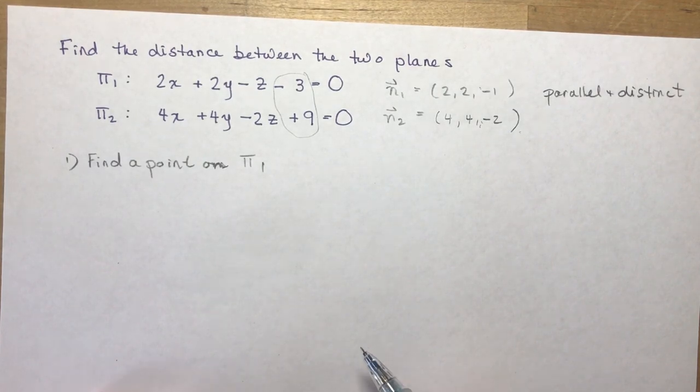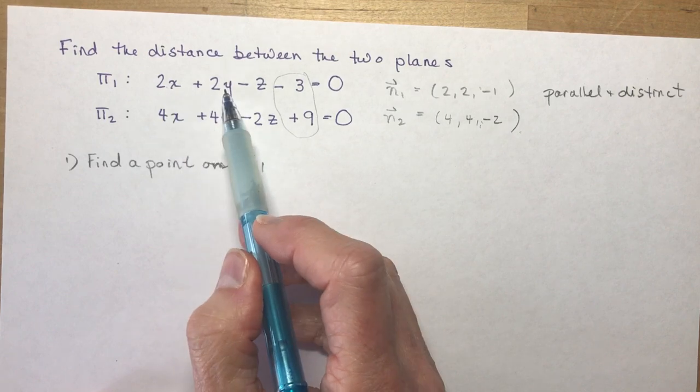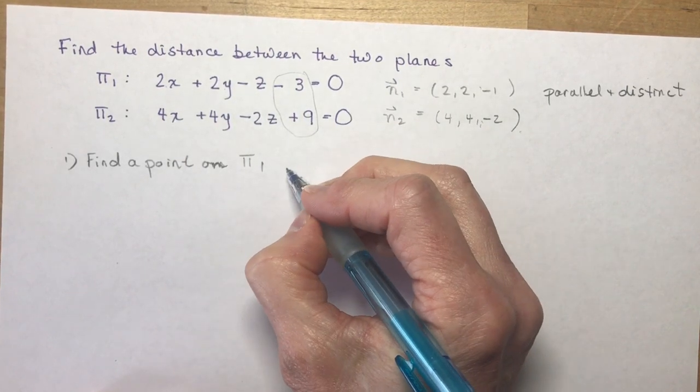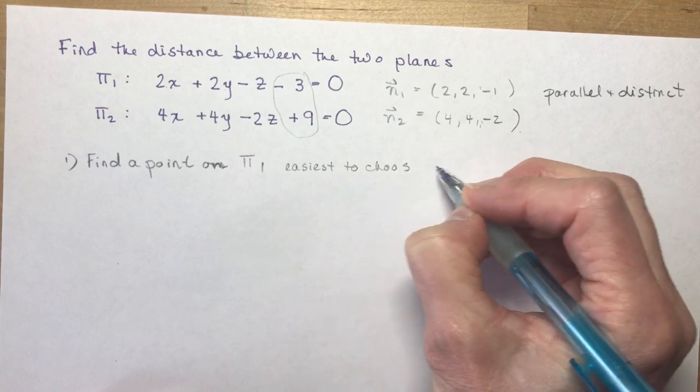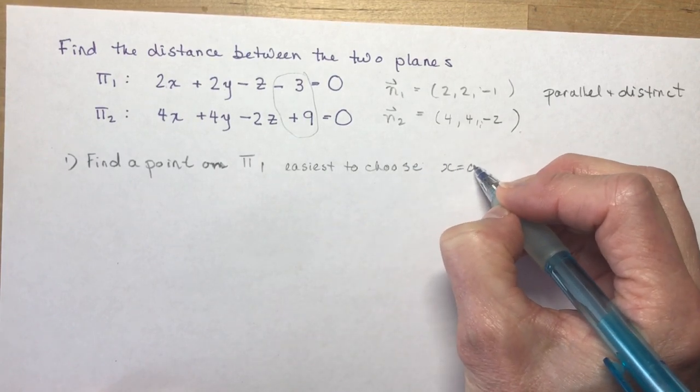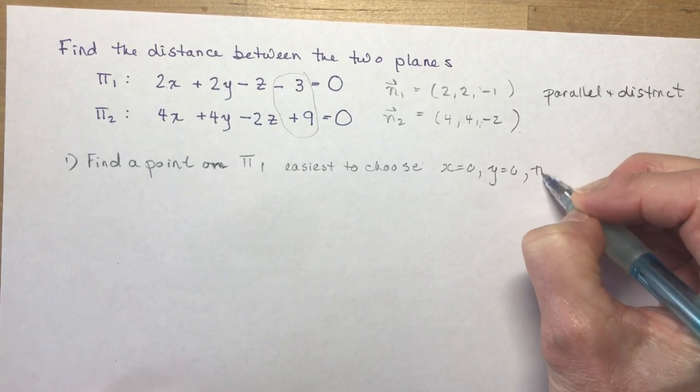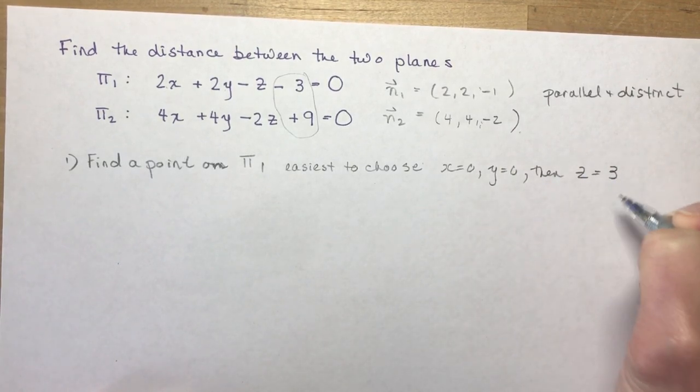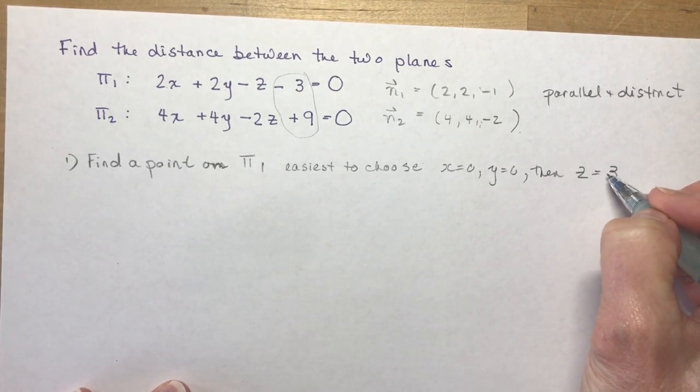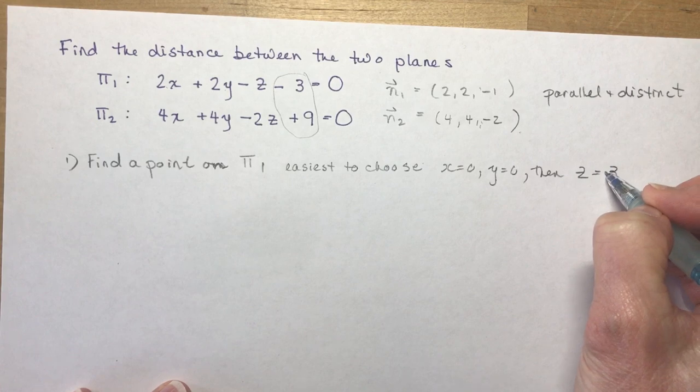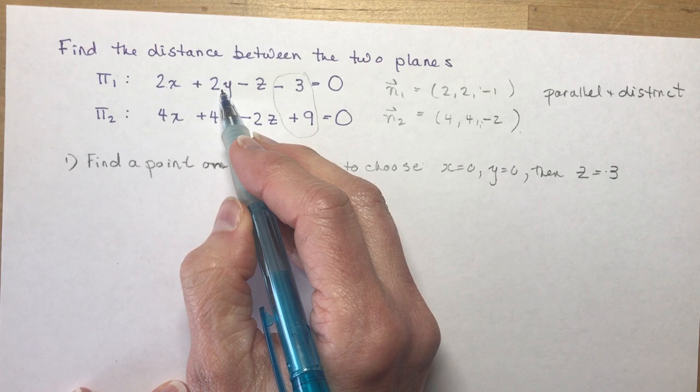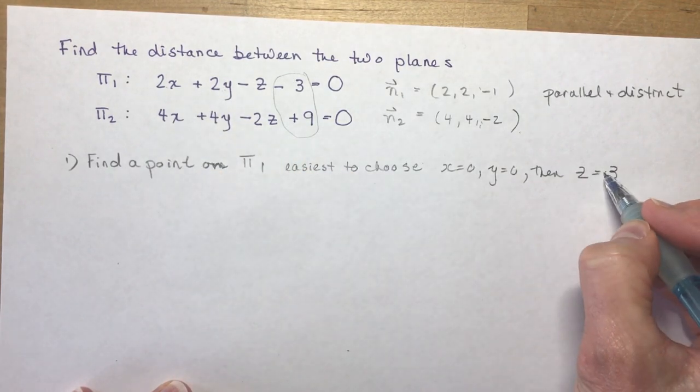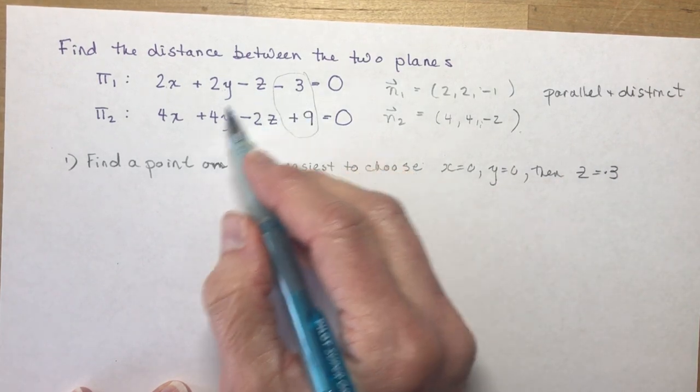So a point on π₁, the easiest one to do would be to say, well, let's say x is 0, y is 0, and that would be z is going to be 3, right? Easiest to choose. x = 0, y = 0, then z is going to be equal to 3. So 0, 0, -3. That's not -3, it would be positive 3. I wonder why I said 3 before. If this is 0, this is 0, 0, 0, and 3.